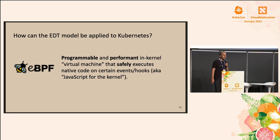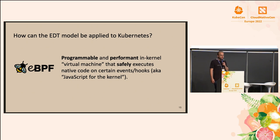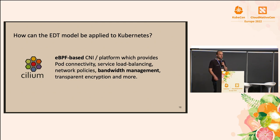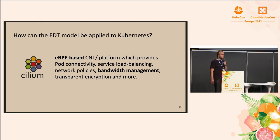So how can this model be applied to Kubernetes? Enter eBPF. eBPF is basically a way to make the kernel programmable — small programs that get verified for safety and can be attached to different points in the Linux kernel. Cilium is an eBPF-based CNI, or better called a networking platform, because it handles pod connectivity, service load balancing, network policies, and so on.